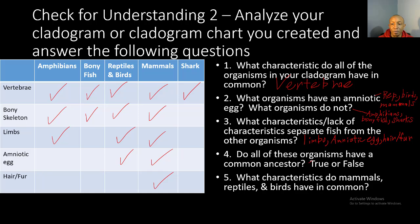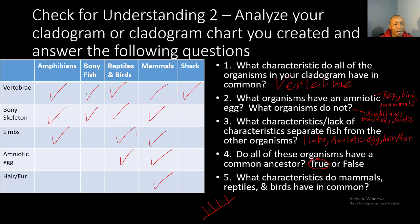Number four: do all of these organisms have a common ancestor? The answer is true. You can tell they have a common ancestor because on the cladogram all those organisms extended from another organism — there is a line extending before sharks that lets you know all organisms on the chart had a common ancestor. Number five: what characteristics do mammals, reptiles, and birds have in common? They share vertebrae, a bony skeleton, limbs, and an amniotic egg. Hair and fur is specific to mammals only.